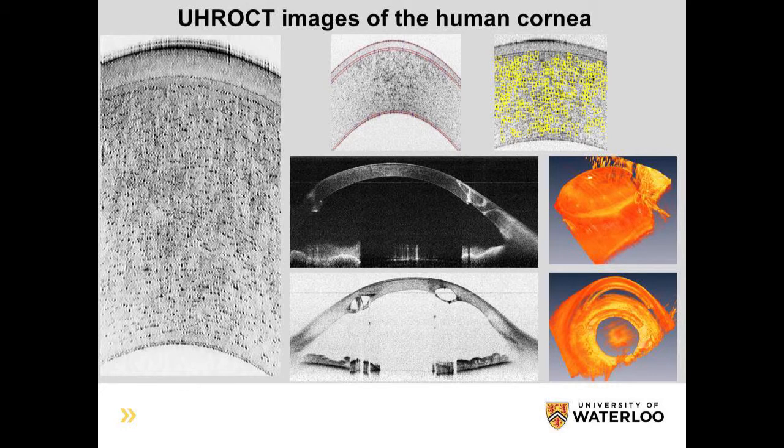The research is multidisciplinary: we have clinical collaborators and we also collaborate with the vision and image processing group at the Systems Design Engineering department. Together we develop automatic algorithms to segment and identify layers in biological tissue, count cells, and use those parameters as diagnostic markers. One application shows a cross-sectional image of the cornea of a patient who underwent corneal replacement surgery; part of the cornea was replaced with a donor one, and the white loop visible is the suture. Combining cross-sectional images gives a 3D view where yellow dots show exactly where the sutures are, allowing us to monitor tissue healing.